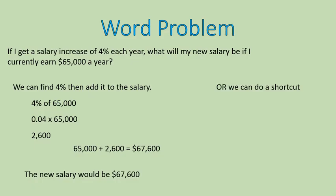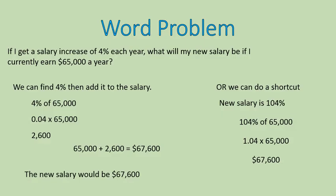If I do it the other method, my new salary is going to be 104% of my old salary. So 104% of $65,000 — I would write that as 1.04 times $65,000 — and I would get the same amount. So two methods to solve the same type of question. I like the second method because it's a shortcut and it's quicker. But if that method is confusing for you, stick with the original method and you'll get through all the problems just fine.